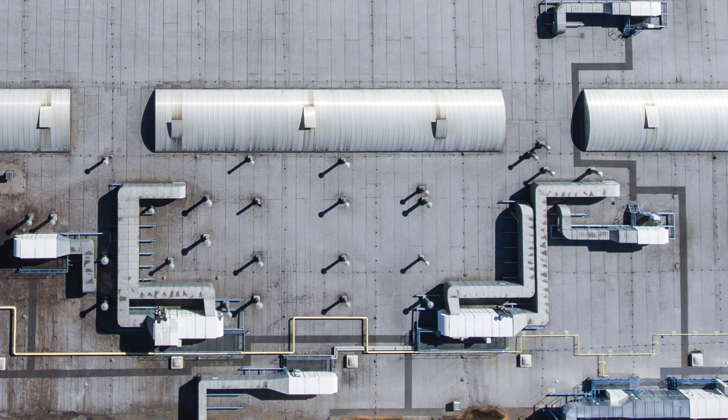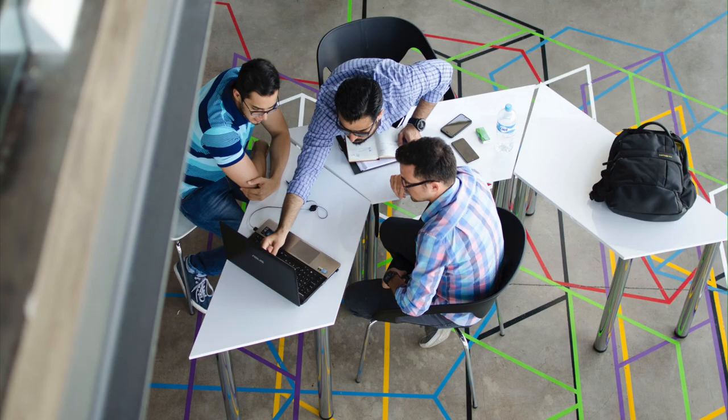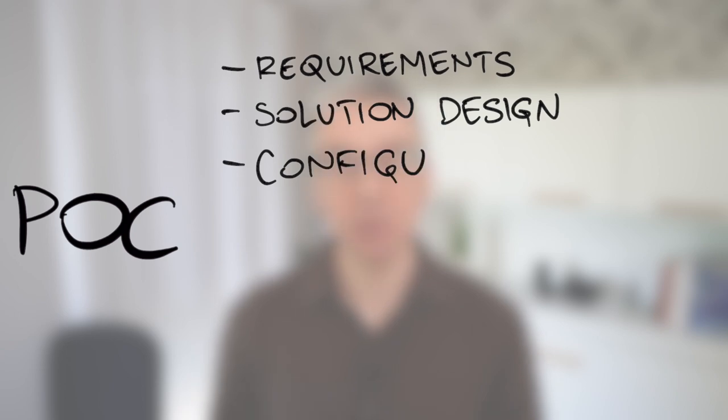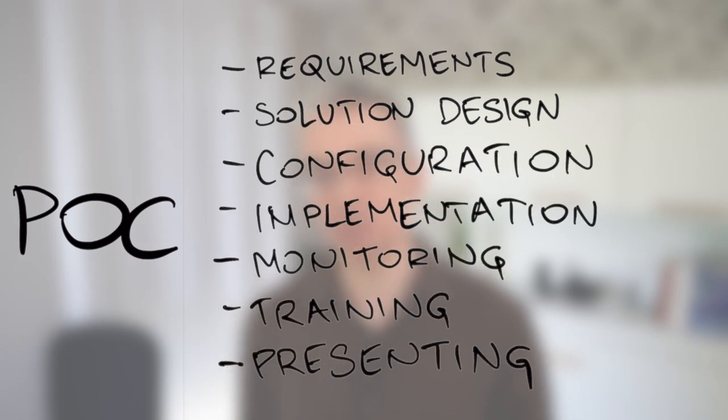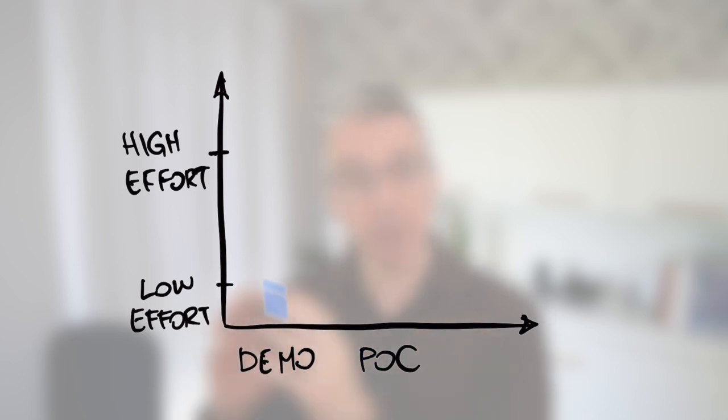A POC on the other hand is a deeper and customized exploration of the product. A POC is often conducted in the customer's environment, whether it's their virtual cloud or network environment or their physical premises. And it requires active engagement and participation by the customer that takes days if not weeks — gathering the requirements, solution design, configuration, implementation, monitoring the progress, training the customer, presenting the results, tons of coffee, calls, meetings and maybe sleepless nights. So to summarize, a proof of concept is a very high level of effort. It's a days or weeks long engagement.